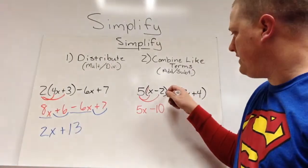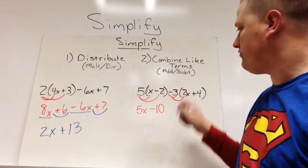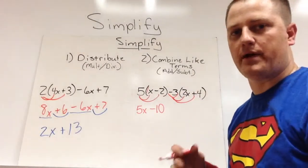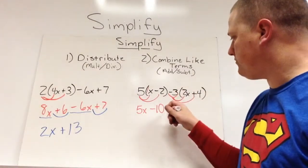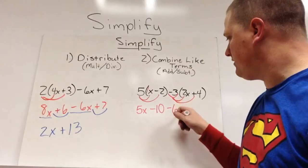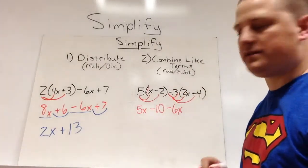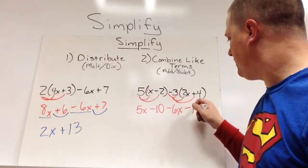Then we're going to take this negative 3 and distribute into the second parenthesis. So negative 3 times 2 is negative 6x. Negative 3 times positive 4 is negative 12.